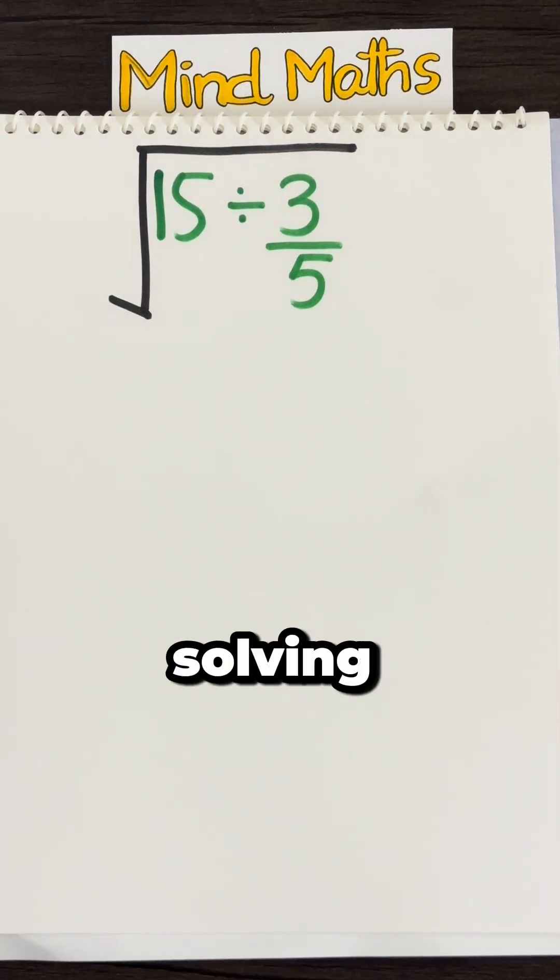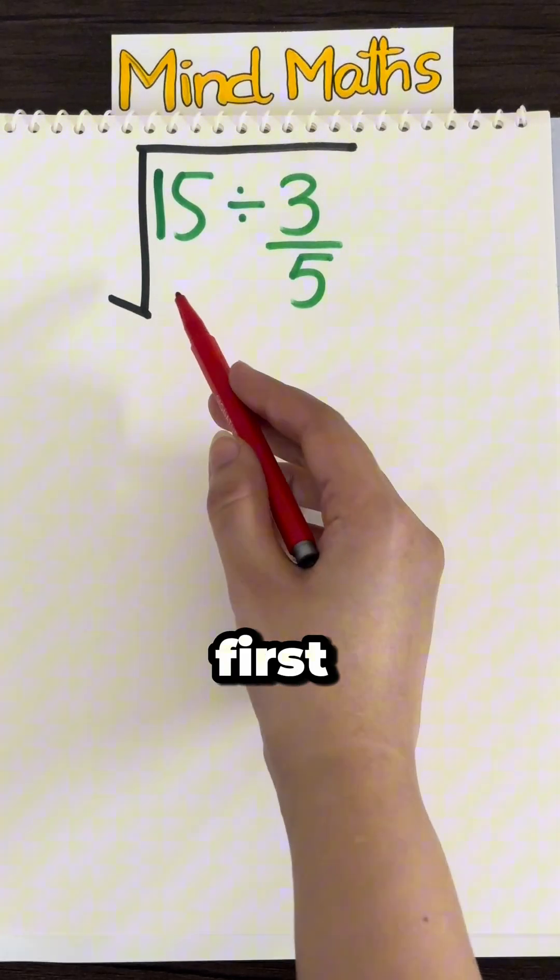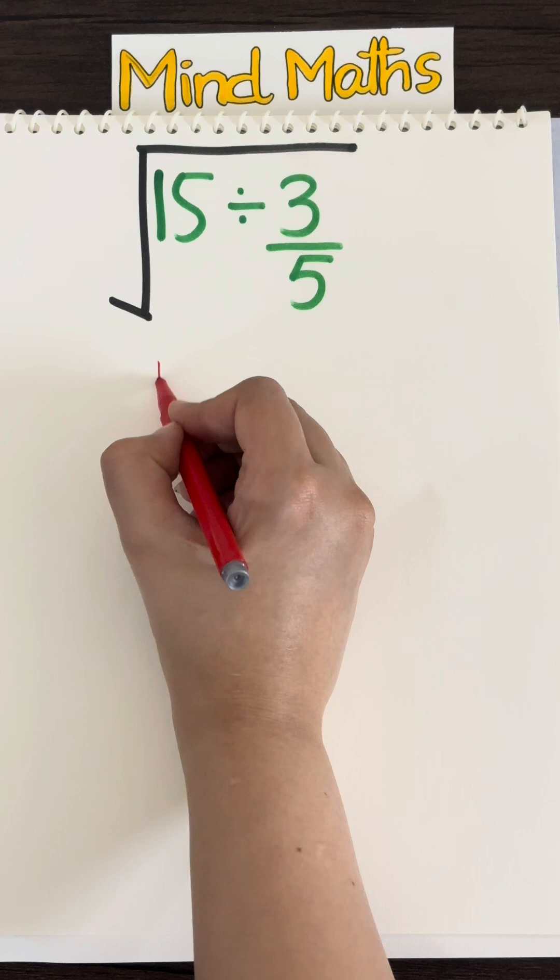What does this mean? So we are solving what's inside the square root first. So 15 divided by 3 over 5.